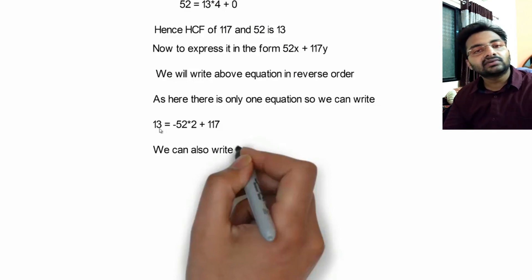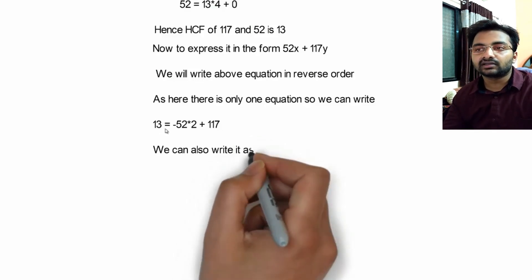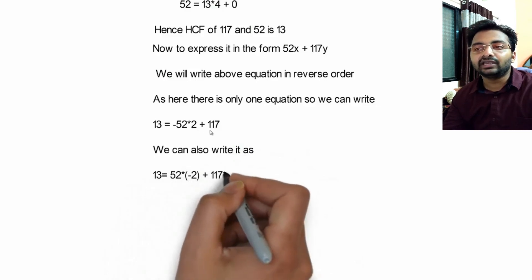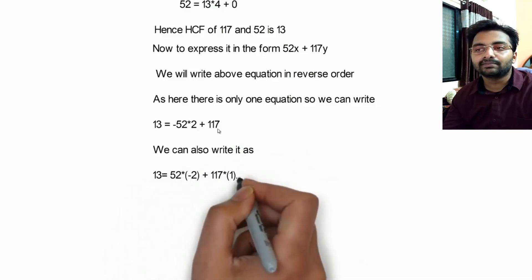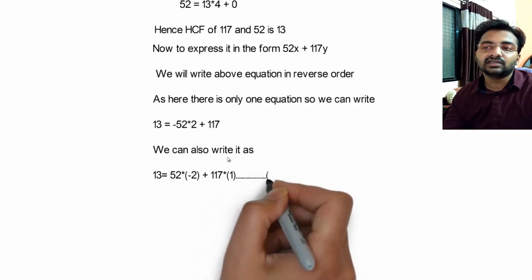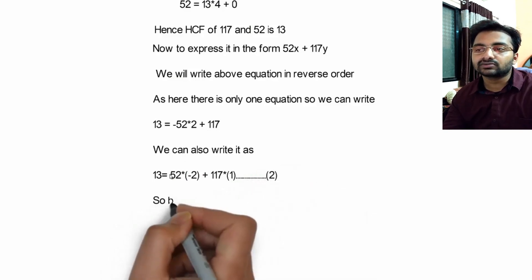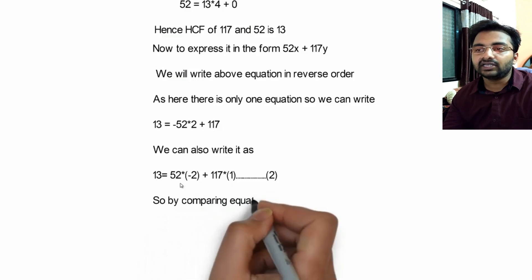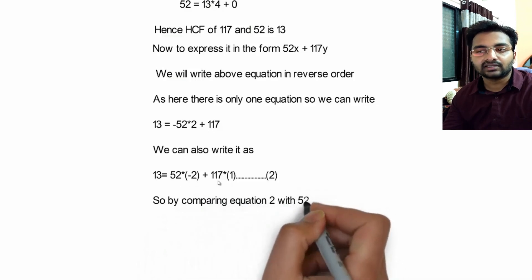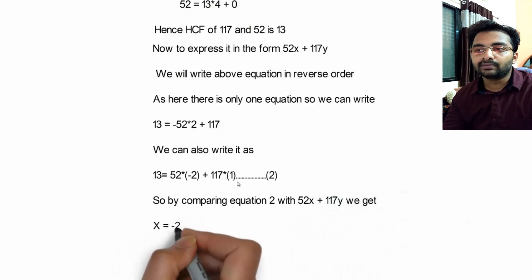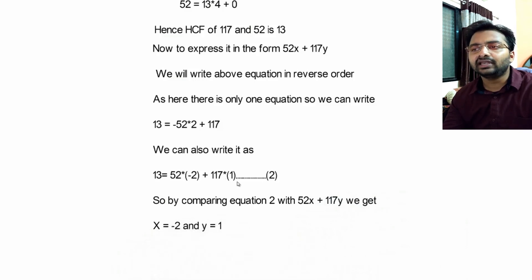Writing equation number 1 in reverse order: 13 = 117 − 52 × 2. We can also write this as 13 = 52 × (−2) + 117 × (1).